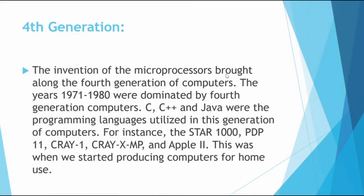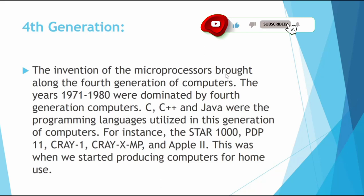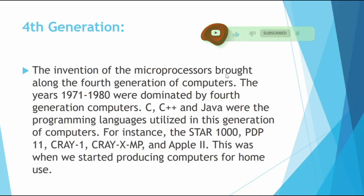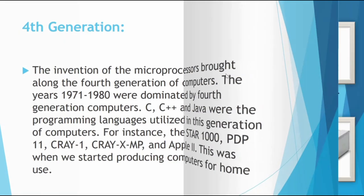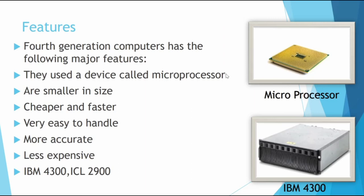The invention of the microprocessor brought the fourth generation of computers, from 1971 to 1980. C, C++, and Java were the programming languages used in this generation. Examples include the Star 1000, PDP-11, Cray-1, Cray-XMP, and Apple II. This was when computers began to be produced for home use. Key features: microprocessors made them very small, cheap, fast, easy to handle, and more accurate. IBM 4300 and ICL 2900 are examples.